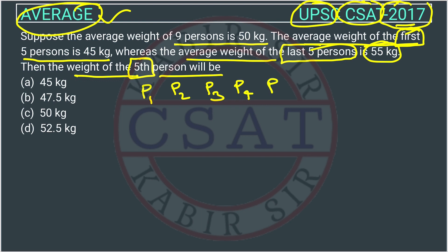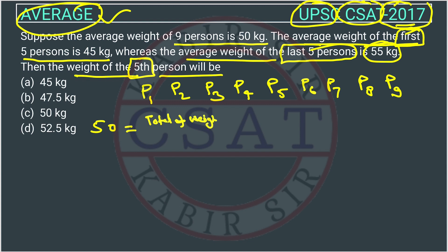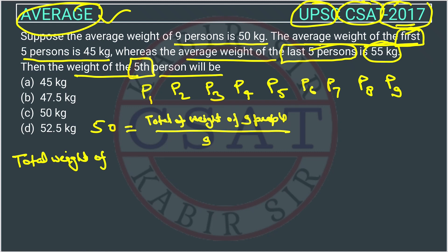Person 6, person 7, person 8, person 9. Their average weight is given as 50 kg. So the total weight of nine people divided by 9 equals 50, which means the total weight of all people — p1 + p2 + p3 + p4 and so on — will be equal to 50 into 9, which is equal to 450 kg.